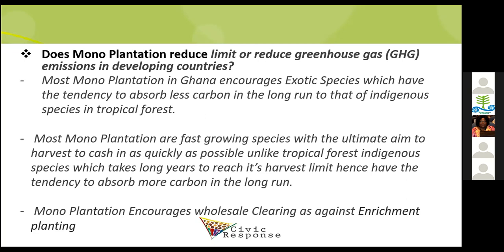Why would the Green Climate Fund invest in exotic species that have less capacity to reduce emissions in the long run? Most mono plantations use fast-growing species with the ultimate aim to harvest as quickly as possible, unlike tropical forest indigenous species which take many years to reach their harvest limit. Mono plantations also encourage wholesale clearance rather than enrichment planting. If the idea is to solve climate change and deforestation, why encourage fast-growing species to be harvested in the shortest possible time instead of indigenous species?